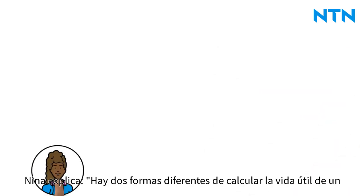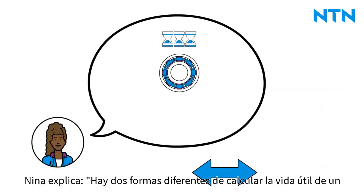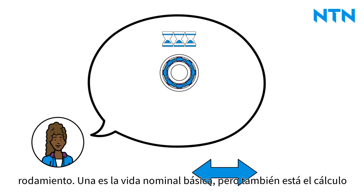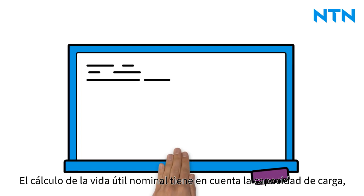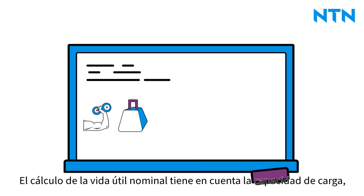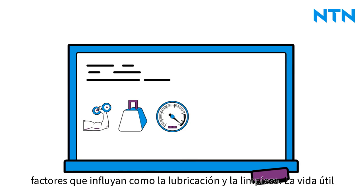Nina explains there are two different ways to calculate the service life of a bearing. One is the basic rating life, but there is also the extended modified rating life calculation. The calculation of the nominal service life takes into account the load rating, load, and speed in the application. However, no influencing factors such as lubrication and cleanliness are included.